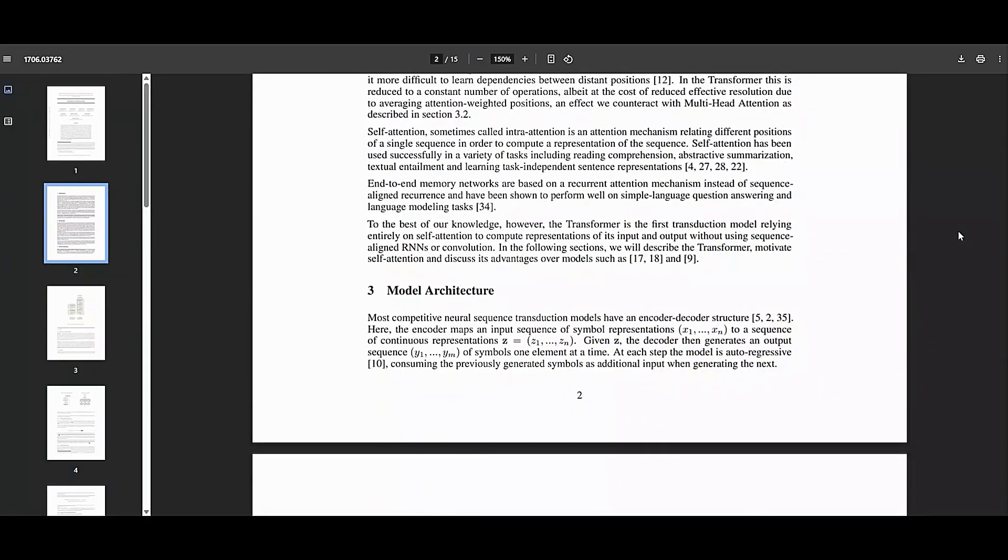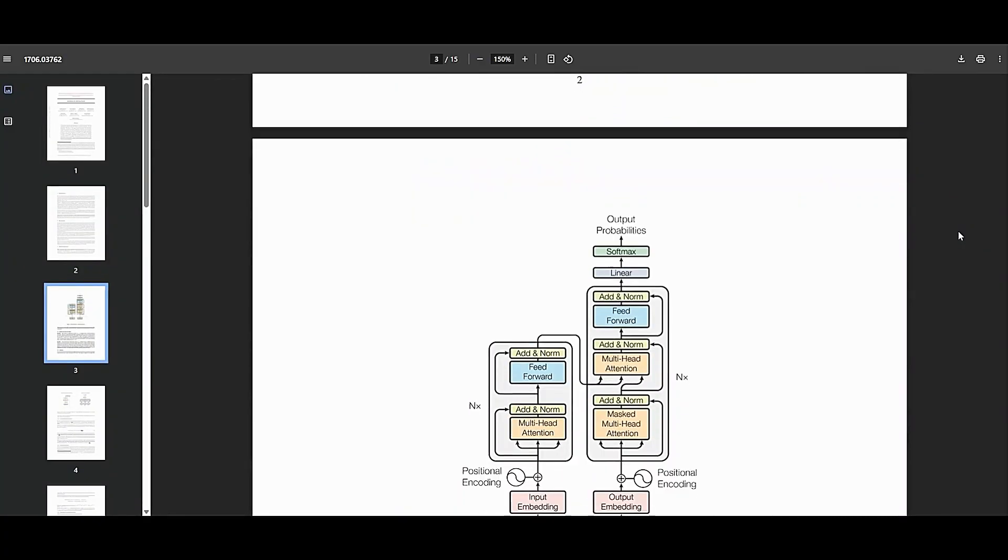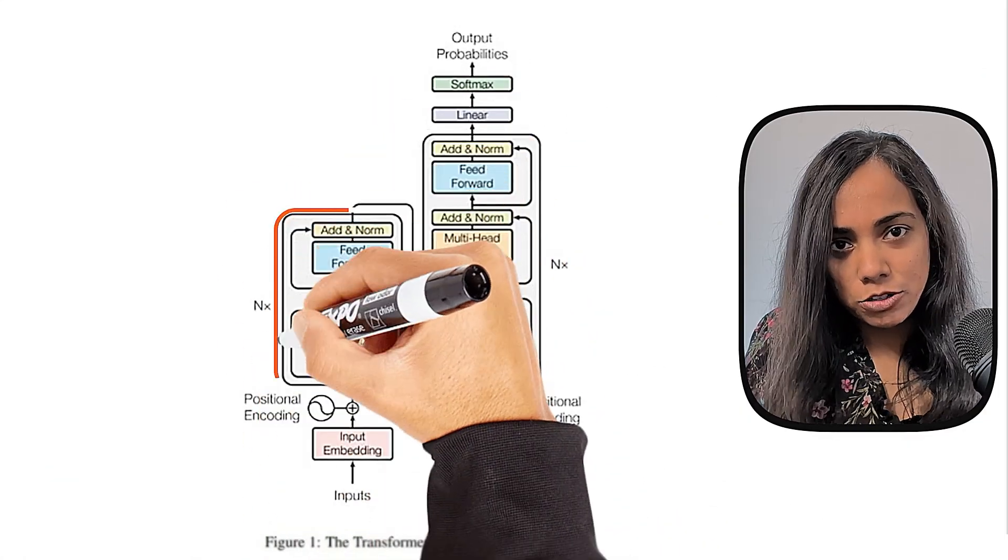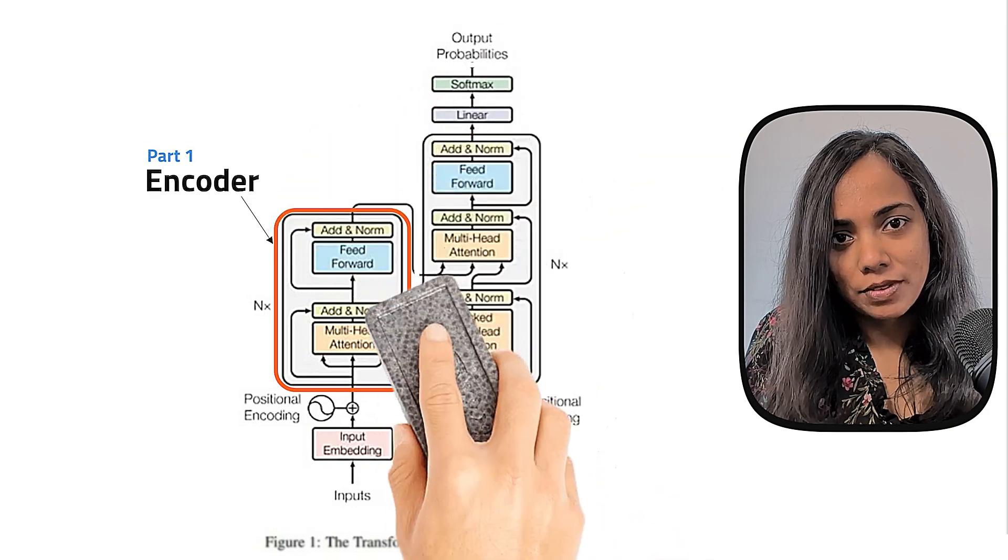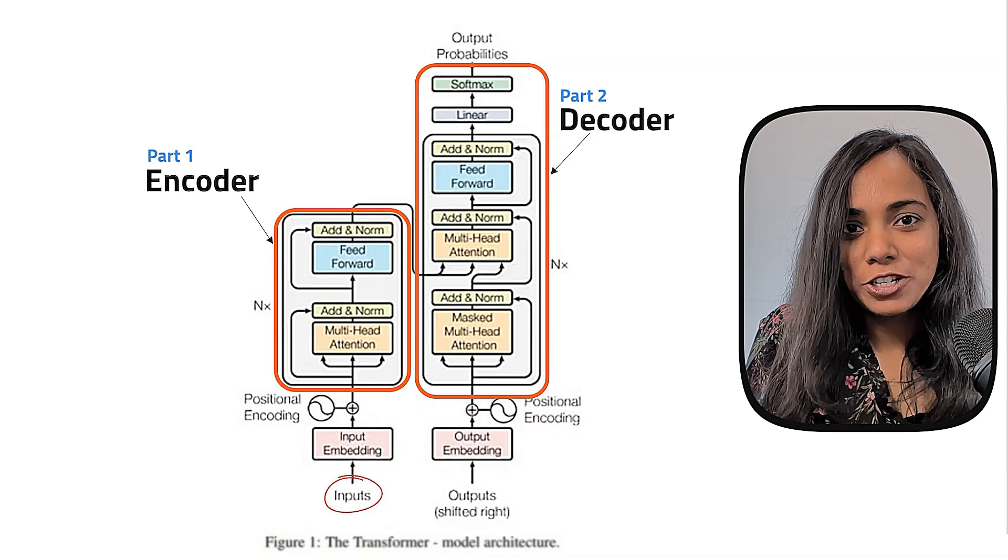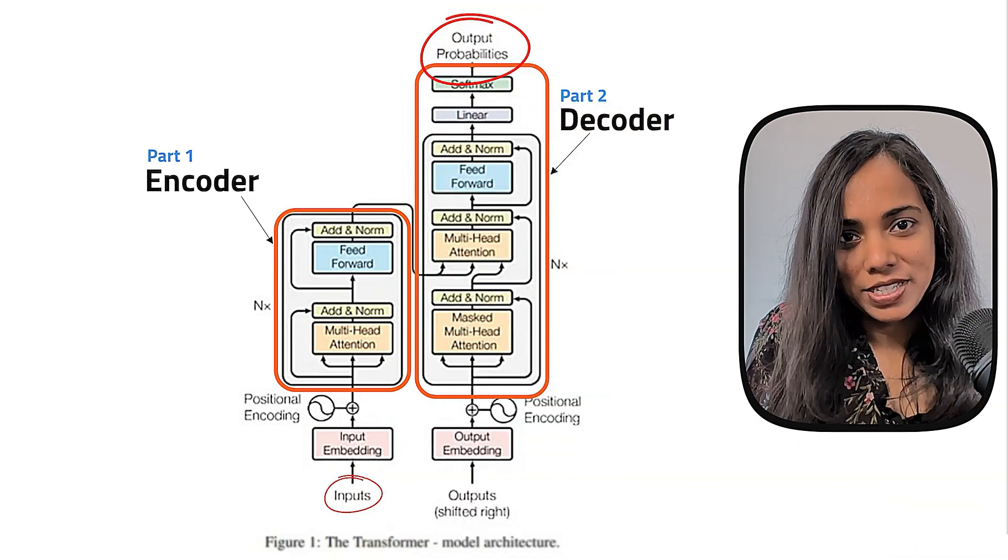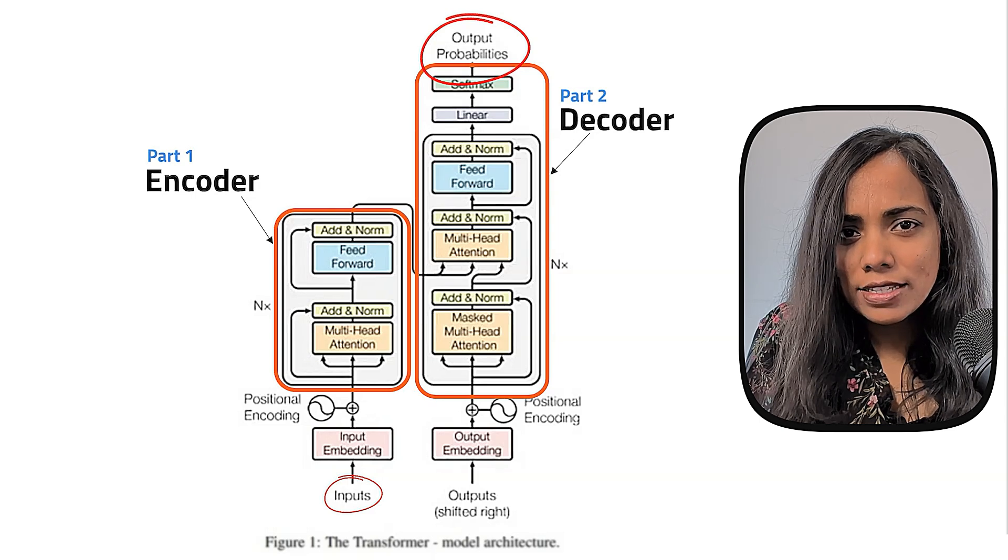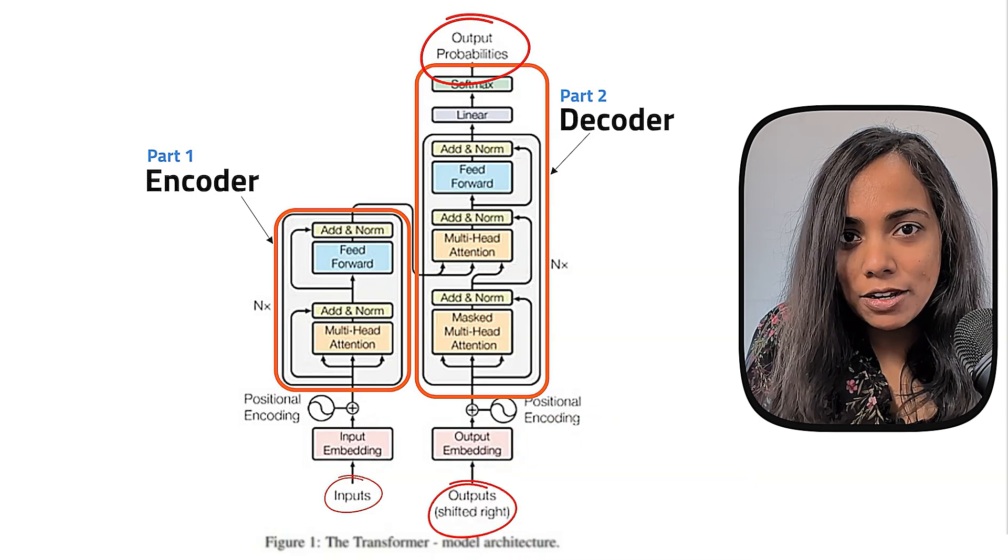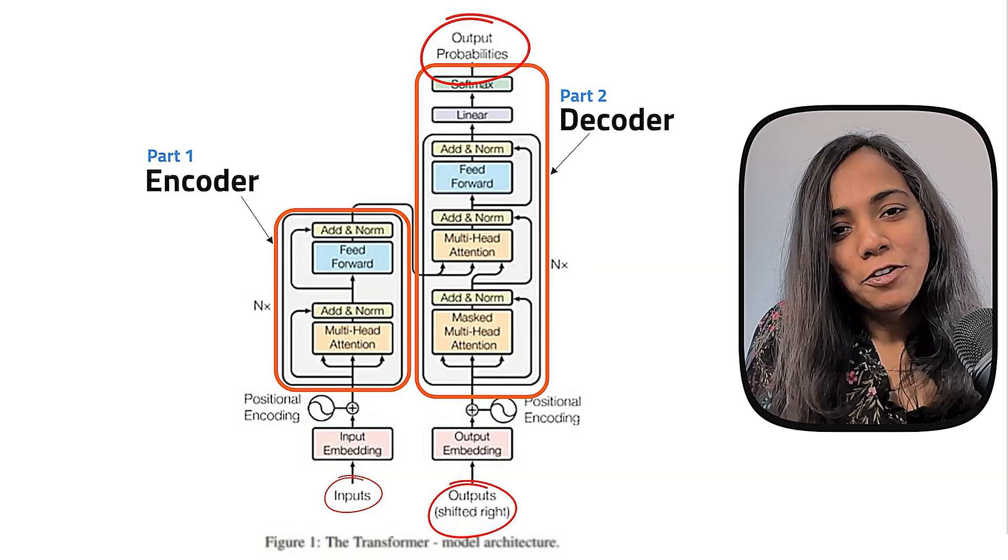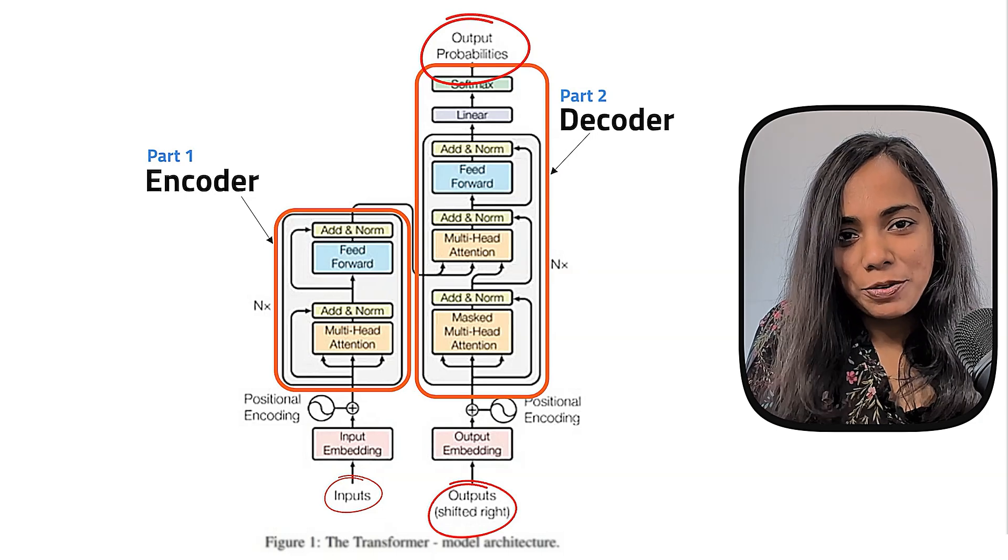Here is the famous architecture diagram that was published in this paper. Transformers have two main parts, an encoder and a decoder. Encoder processes the input sequence and decoder creates the output sequence. You might wonder why there is an inward arrow if the decoder is supposed to produce the output. We'll get to that in a few minutes.